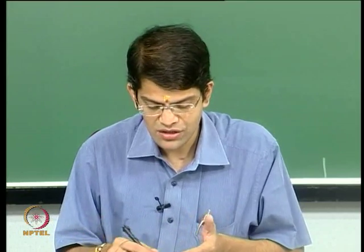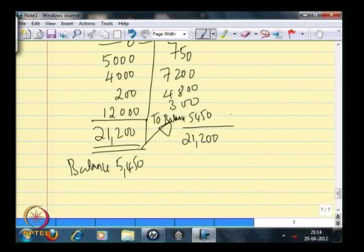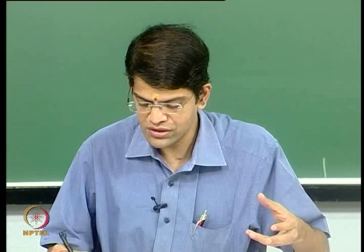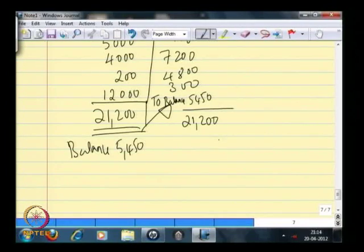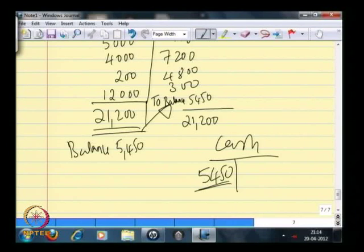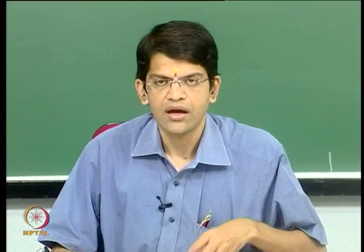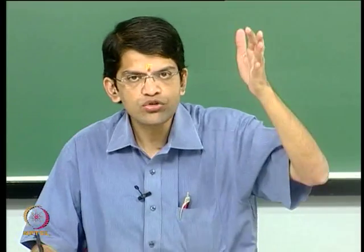Debit and credit need to match — to balance, 5,450 credit matches the debit, giving 21,200 total. But the point I want to explain is that at the end of this particular month, cash has a debit balance of 5,450. This is one account where the balance is 5,450 on the debit side. Likewise, different accounts will each have a debit balance or a credit balance based on how each transaction has affected each of those accounts.